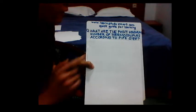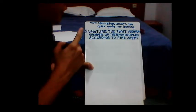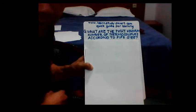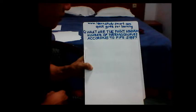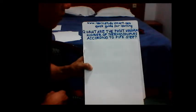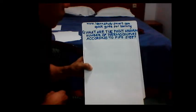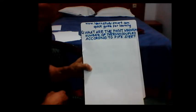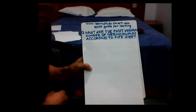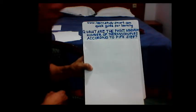Hello guys, once again this is www.learnstudysmart.com, a quick guide for learning. My question now is: what are the PWHT or post weld heat treatment minimum number of thermocouples according to pipe size? Let's start.